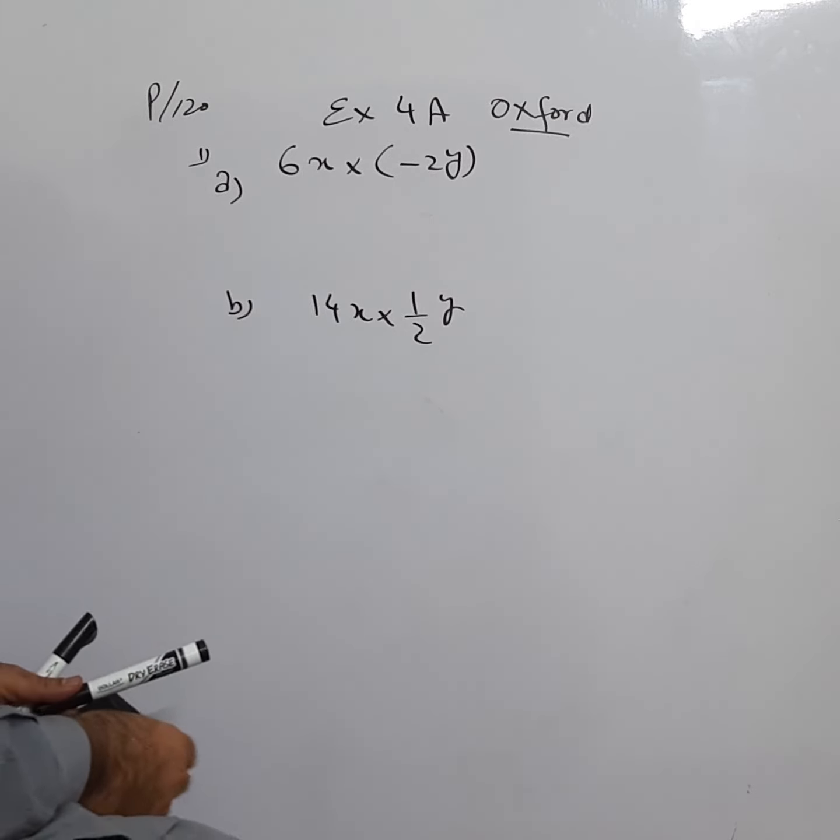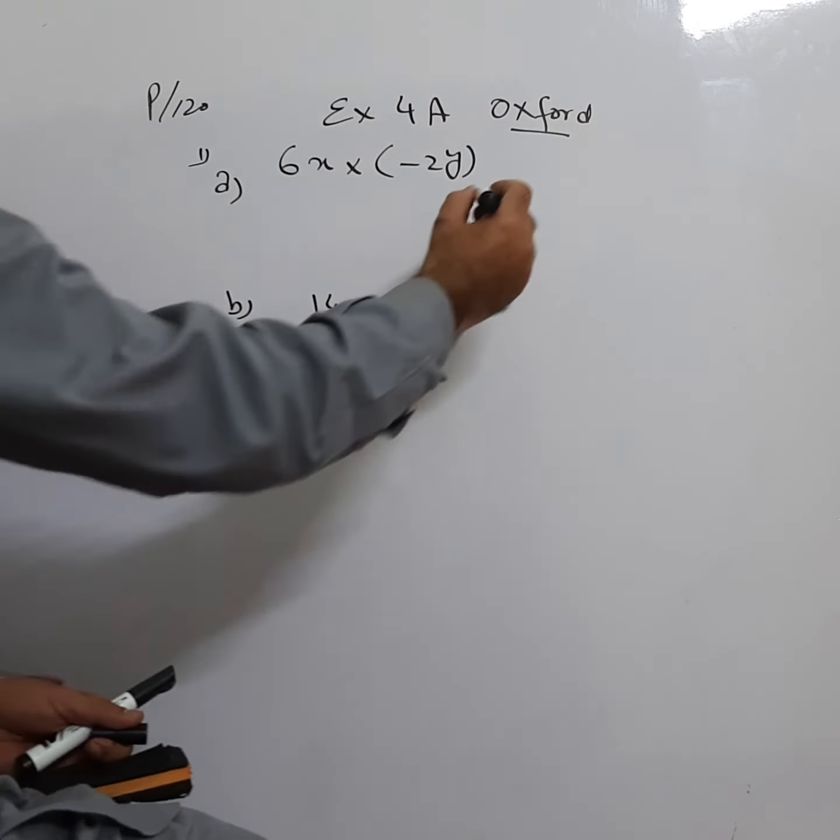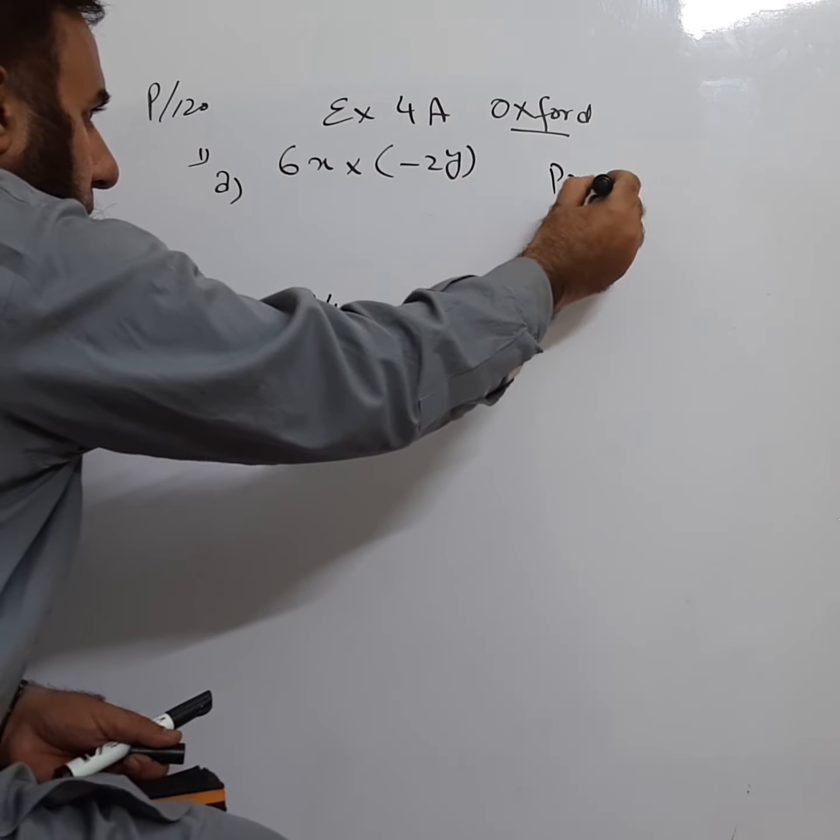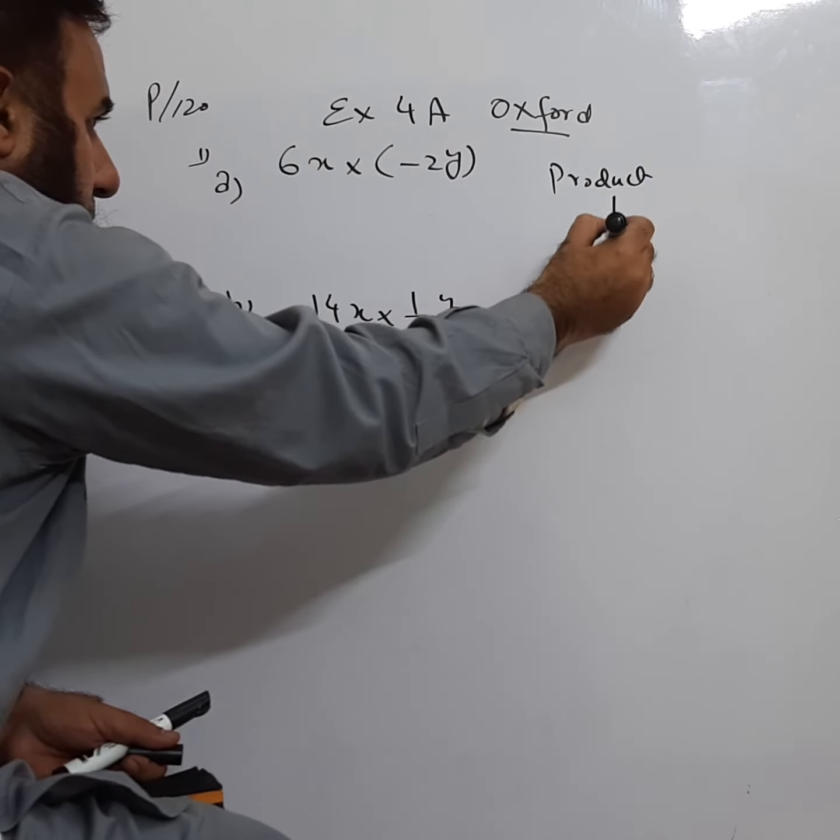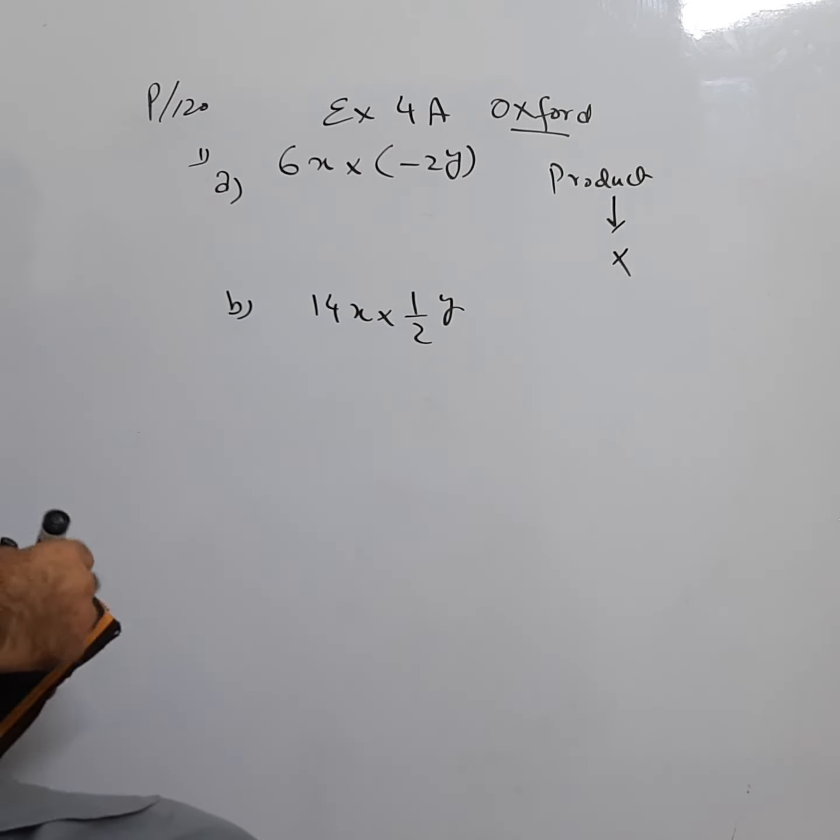Oxford D2 Math edition. The first question is find each of the following products. Product, what is product? Product is multiply. We will be doing multiplication here.